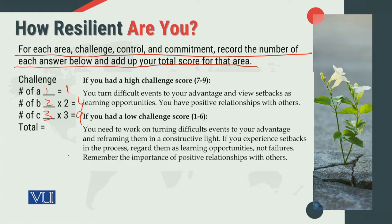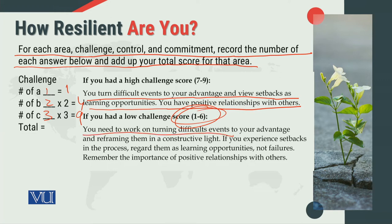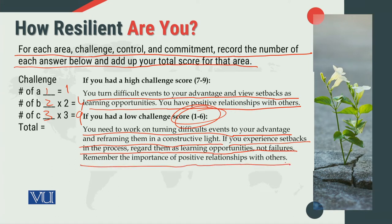Ab agar aapki score 7, 9 ya isse zyada hai — inki sum total score — that means you turn difficult events to your advantage and view setbacks as learning opportunities; you have positive relationships with others. Lekin agar aapki score ek se chhe ke darmiyan hai, toh you need to work on turning difficult events to your advantage and reframing them in a constructive light. If you experience setbacks, regard them as learning opportunities, not failures. Remember the importance of positive relationships with others.